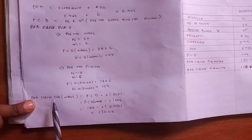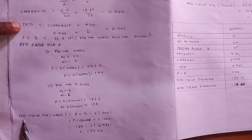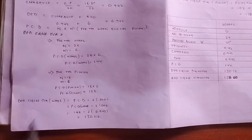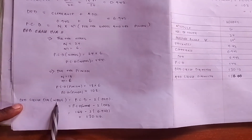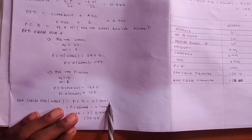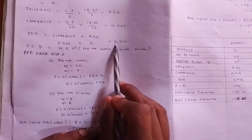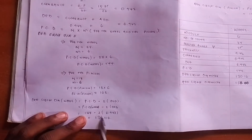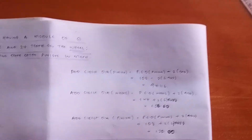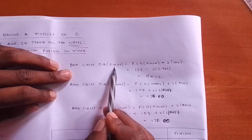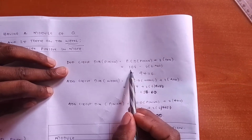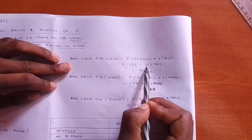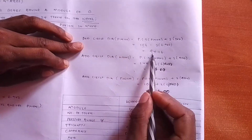The next feature is the dedendum circle diameter. We use the dedendum to look for it. For the wheel: dedendum circle diameter equals PCD minus 2 times dedendum. Our dedendum is 6.942, so it is 144 minus 2 times 6.942, which gives 130.116. For the pinion: we use the PCD of the pinion, which was 108, minus 2 times 6.942, and the dedendum circle diameter of the pinion is 94.116.